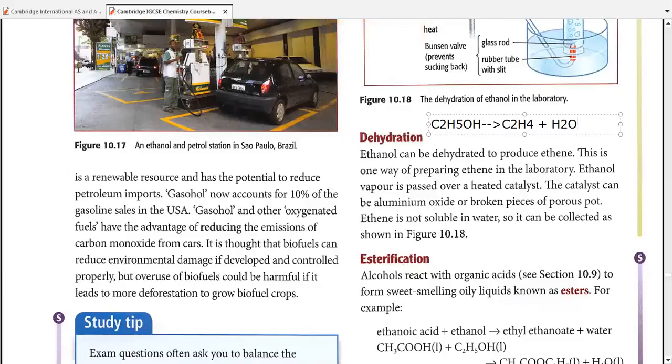Alcohols being dehydrated to produce alkenes is one of the ways we produce alkenes in laboratory. We are not talking about producing alkenes on a large scale. This is done in laboratory for simply qualitative or quantitative testing purposes. Alcohol vapors are passed over heated catalyst. The catalyst can be aluminum oxide or broken pieces of porous pot. So the reaction can be noted down with the catalyst aluminum oxide or broken porous pot pieces.